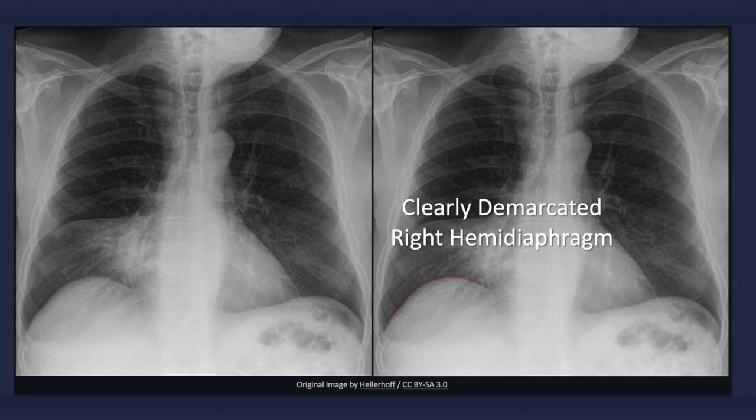Note that the superior border of the right hemidiaphragm is clearly defined. This helps to differentiate a right middle lobe pneumonia from a right lower lobe pneumonia, in which case the right hemidiaphragm would be obscured.